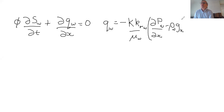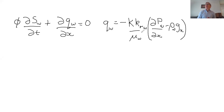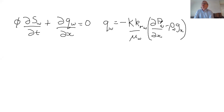Let's go through the terms. This is the absolute permeability K. This is the relative permeability — the amount by which the flow is restricted due to the presence of other phases, in this case oil. Mu is the viscosity of water. This is the pressure gradient in the water in the x direction. And then we have the density of water and g_x, which is the component of gravity in the flow direction.